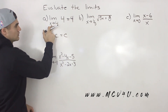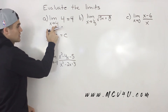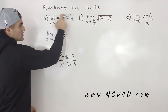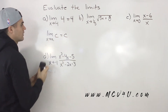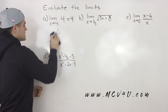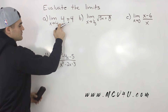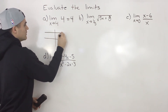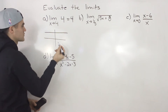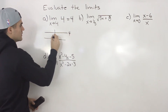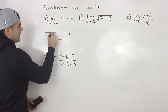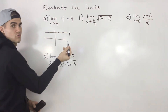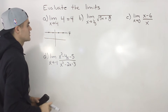It doesn't really matter what x value we're approaching — it could be 5, 10, whatever. The fact that this is a constant means it's always going to equal that constant. Because if you graph this function, it's actually just a horizontal line y = 4. So as we approach any x value on the line, the y value is always going to approach 4. The answer to this limit is just 4.